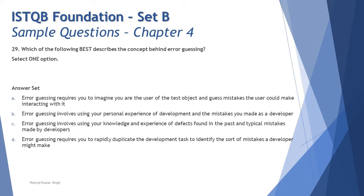Option A says: error guessing requires you to imagine you are the user of the test object and guess mistakes the user could make interacting with it. This is more on the usability side, telling you what kind of mistakes a user can make, and identifying that would lead you to make the product more user-friendly. But the objective of error guessing is not that, so this does not meet our expectations.